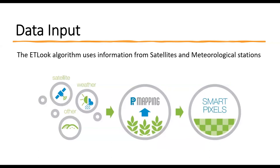In order to run the ETLOOK algorithm, information is needed from satellites and meteorological stations. From satellites, data on surface albedo, NDVI, and microwaves for top and subsoil moisture is needed.